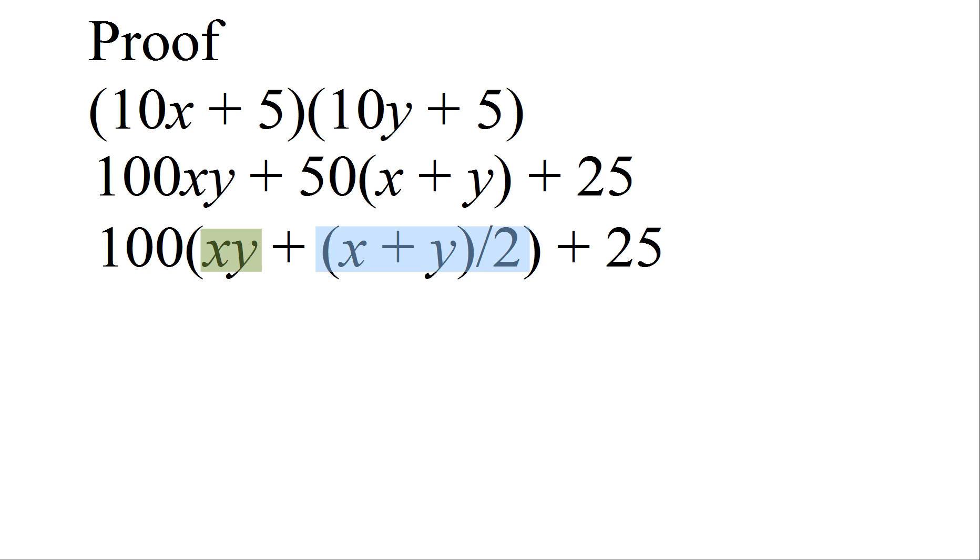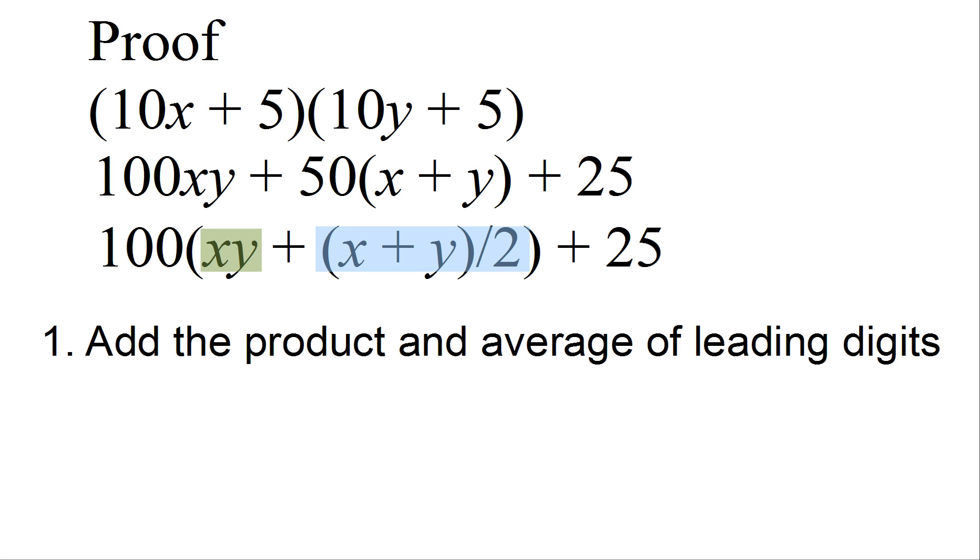xy is the product. x plus y over 2 is the average. So this is adding the product and average of the leading digits. We're then multiplying by 100. That's the 100 part. And then finally we're adding 25.